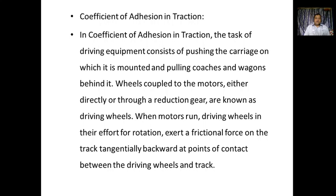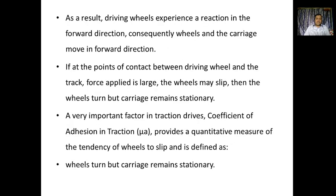As a result, the driving wheels experience a reaction in the forward direction; consequently, the wheels and the carriage move in the forward direction. This is the force acting upon the wheels in the forward direction. If at the points of contact between the driving wheel and the track the force applied is large, the wheels may slip — the wheels turn but the carriage remains stationary — so there should be a proper balance between them.